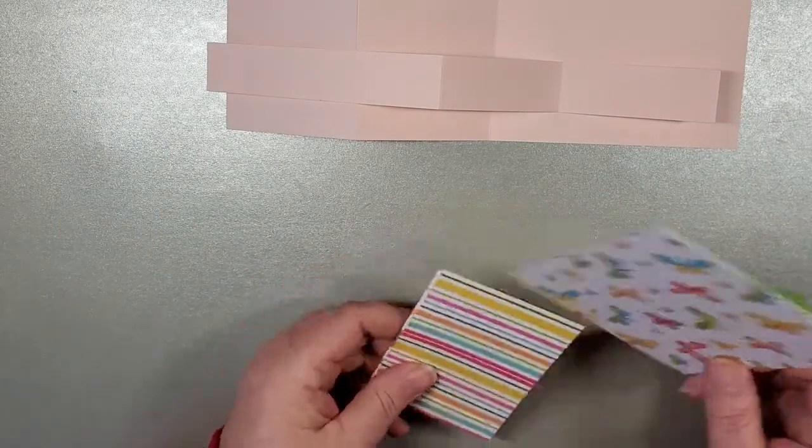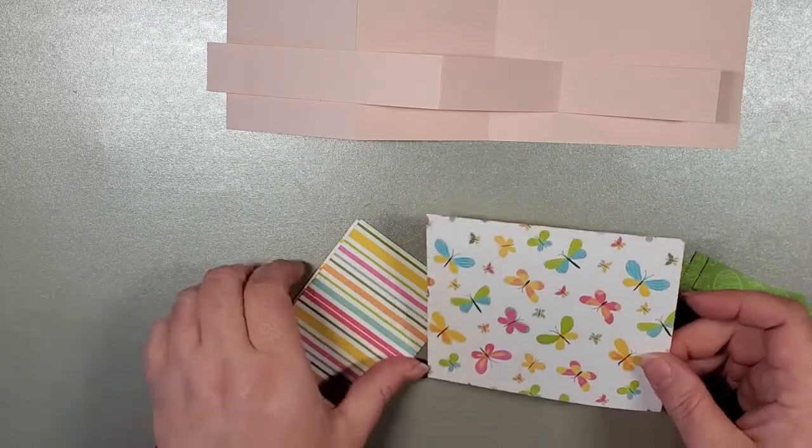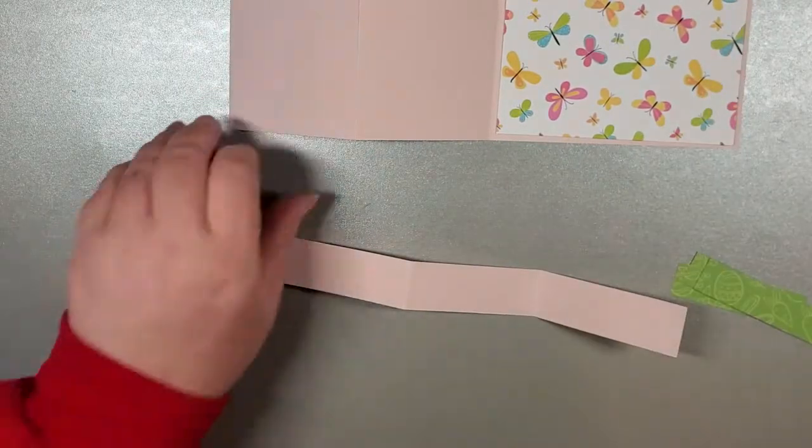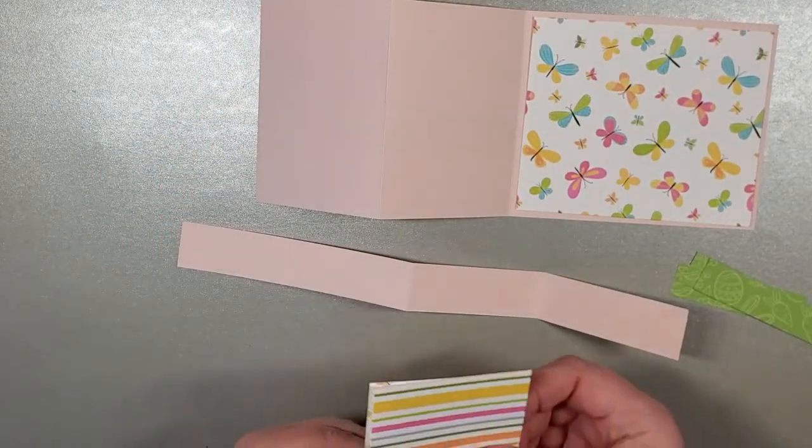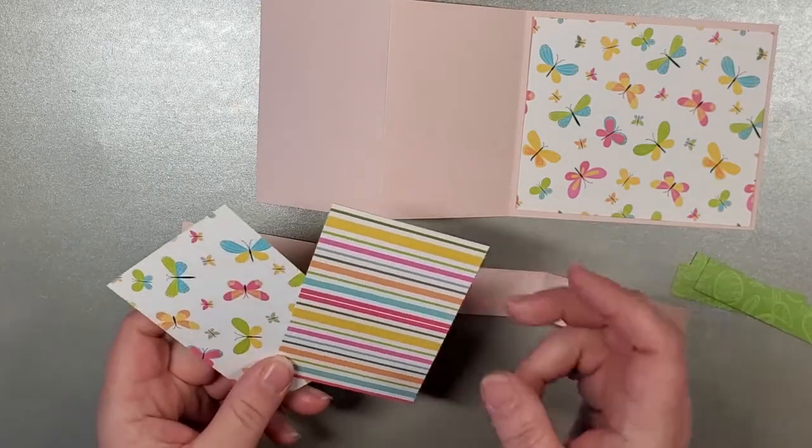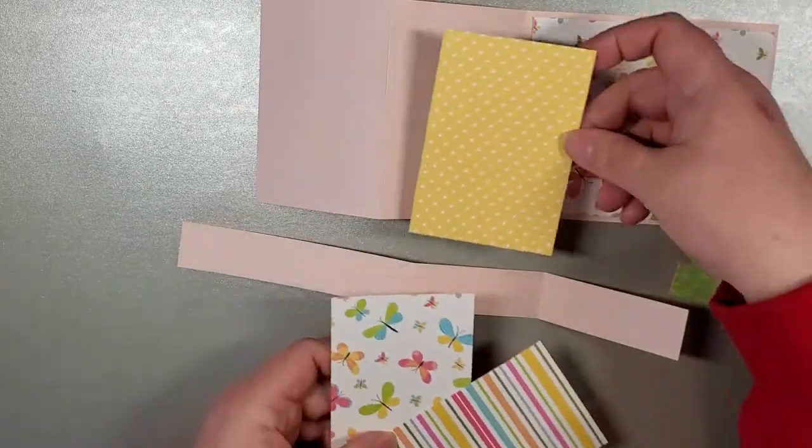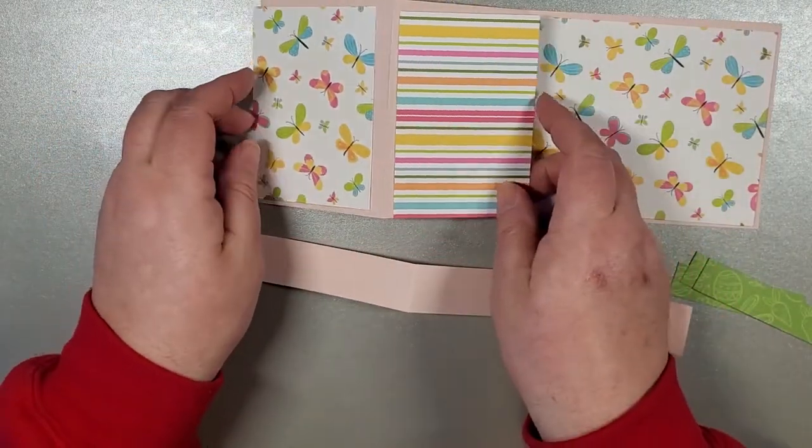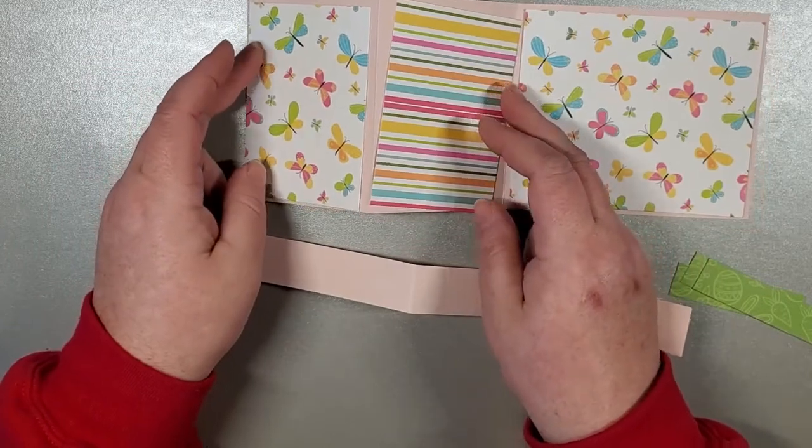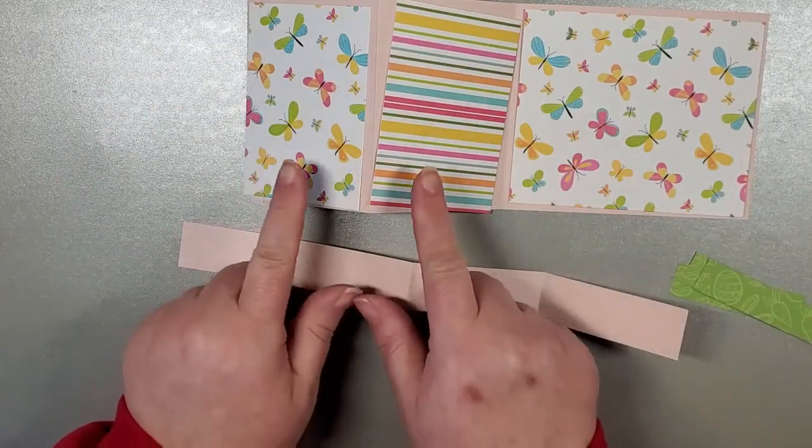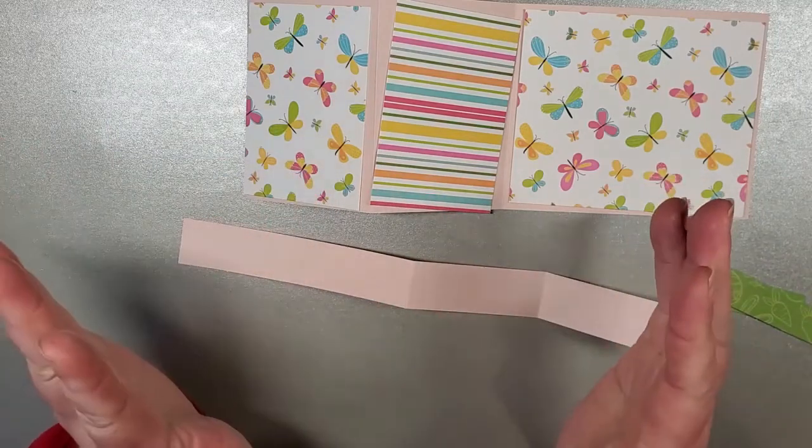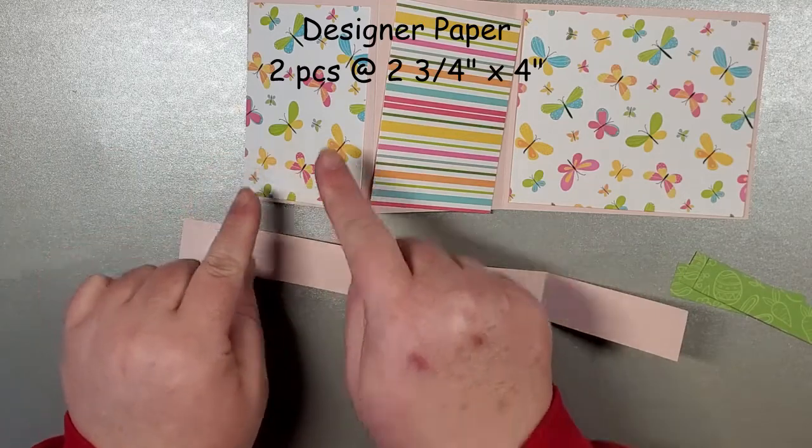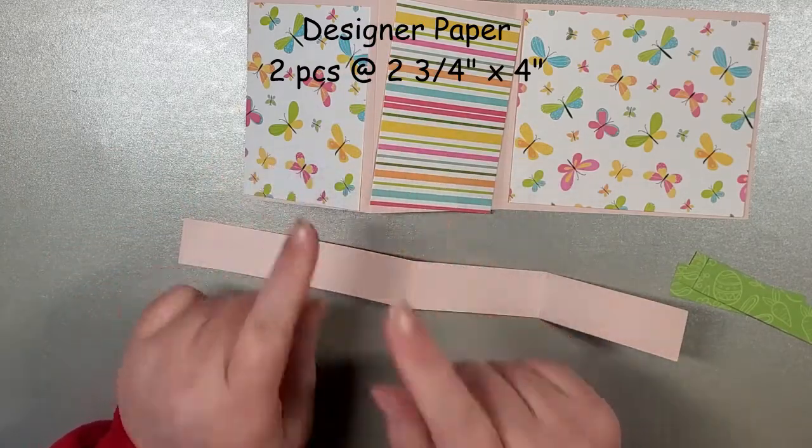I've got some pieces that we're going to be using to decorate the background. I love this butterfly paper. I just thought it was so happy and cheerful and spring-like. For the designer paper, you're going to need two pieces. They can be the same if you'd like, or they can be different. These are 2 and 3 quarters by 4.